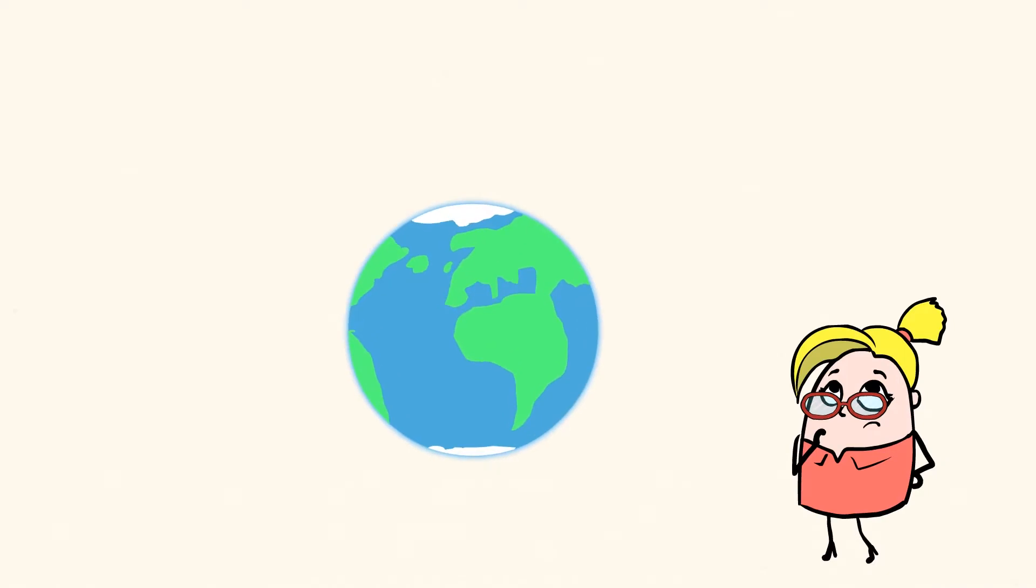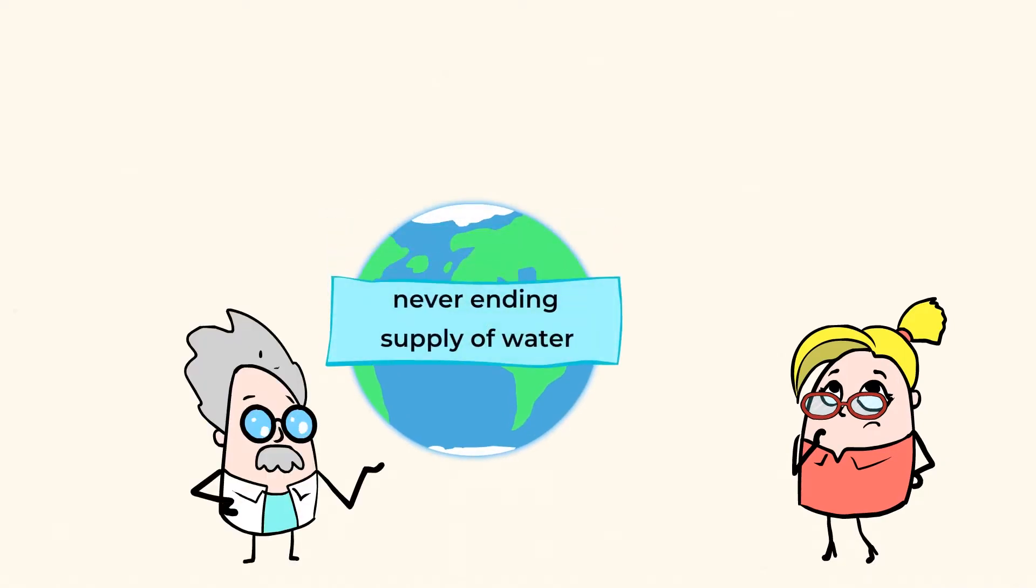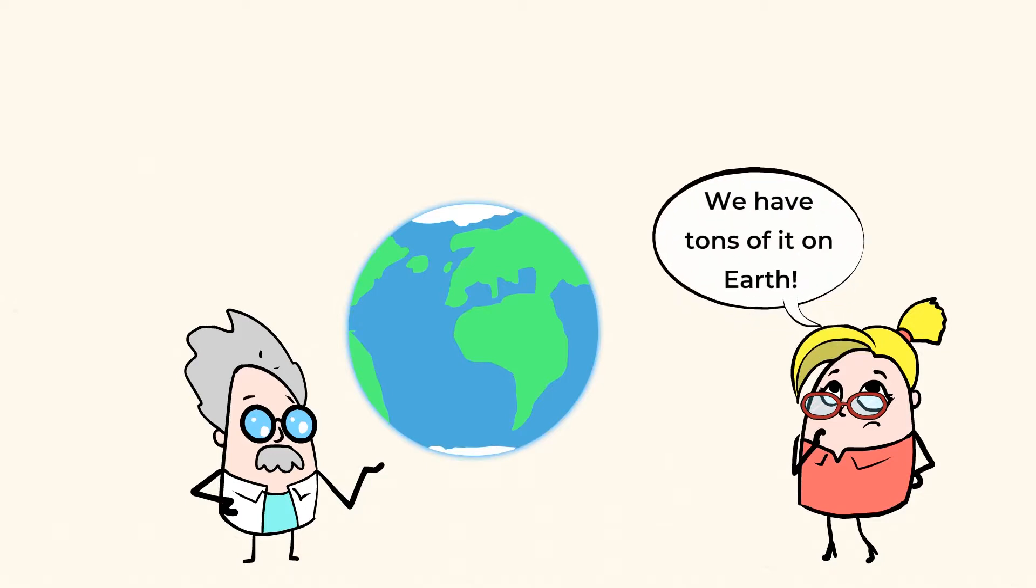It may seem like we have a never-ending supply of water to use here on our planet, but that's not the case. If you look at a globe, you might say there is water everywhere. We have tons of it on Earth. And you're right. Water does cover 71% of the Earth's surface. However,